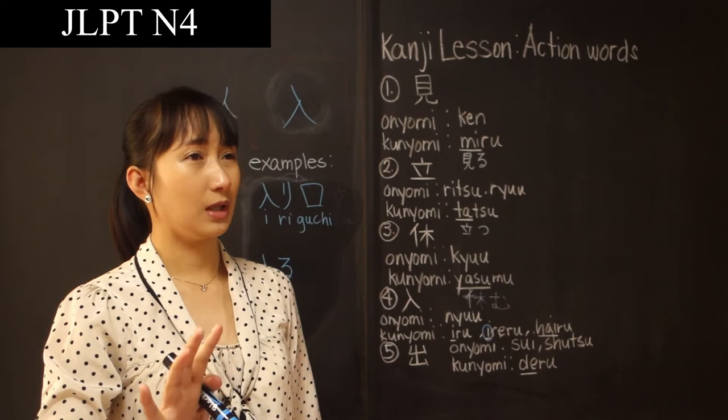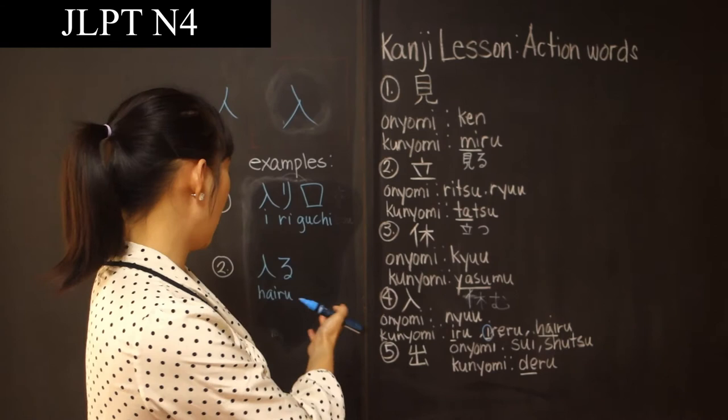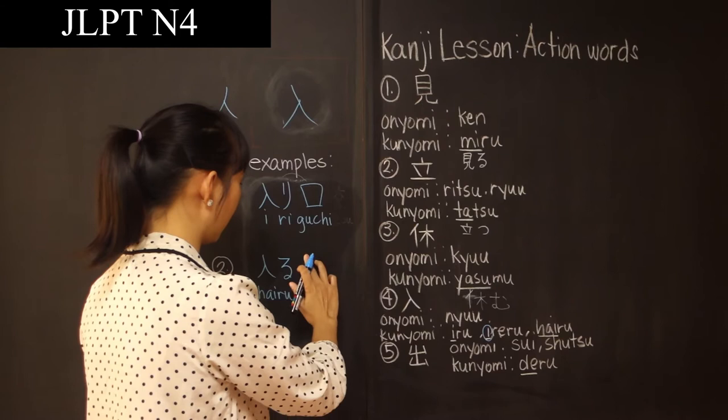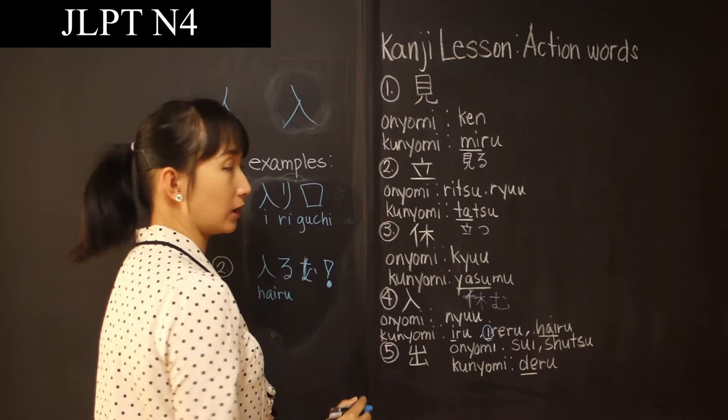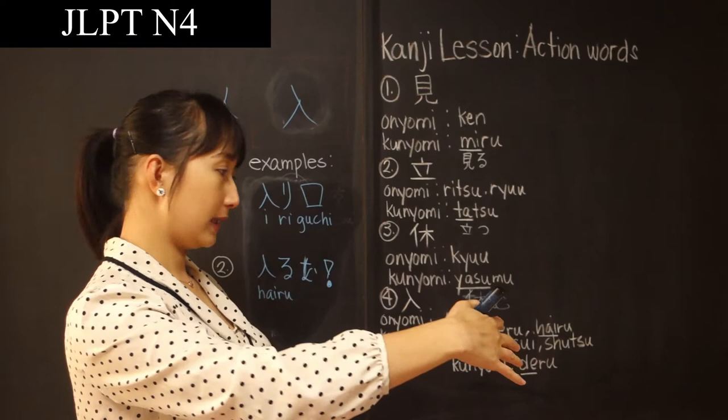Sometimes when you are outside, you will see the kanji Hairu na, which means don't enter — you are being prohibited from entering that place. Hairu na means please don't enter.